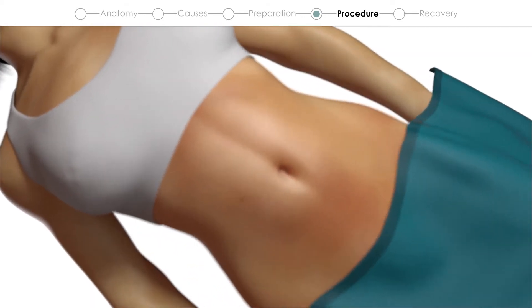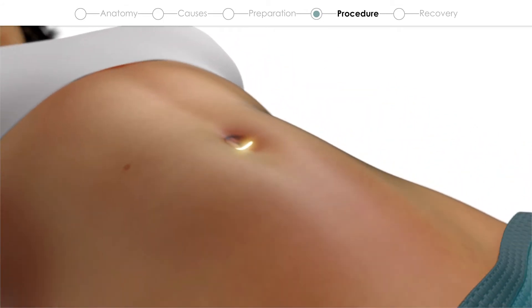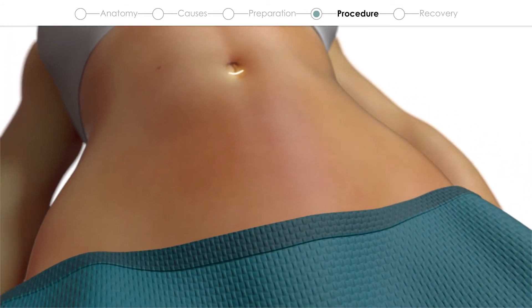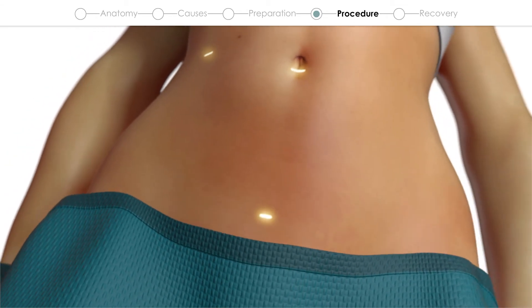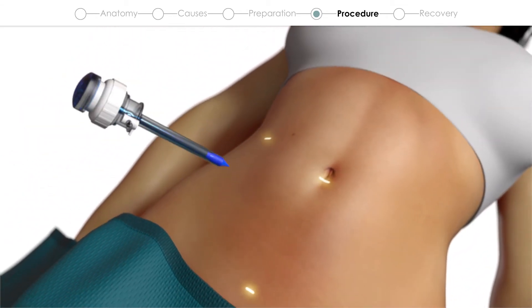With keyhole surgery, a small incision is made at the belly button where the camera will go. Then, normally, two additional small incisions are made lower down the abdomen.